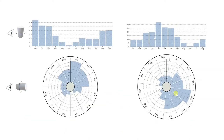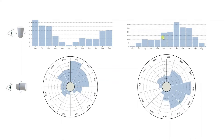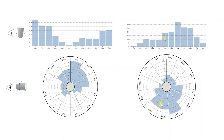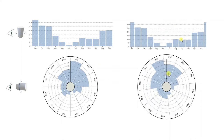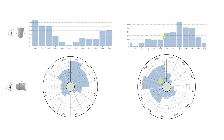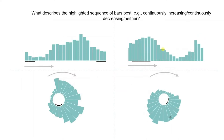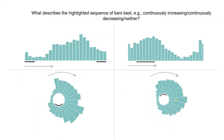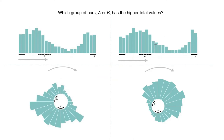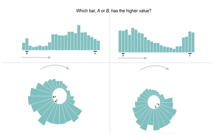We explore visual representations for cyclic data and the effects of interactively wrapping the visualization around its boundaries. Does adding interactive wrapping to linear bar charts improve their usability for trend or value comparisons for cyclic time-series data?